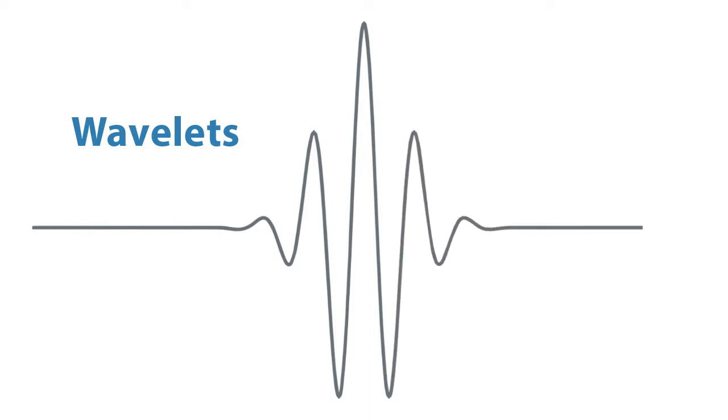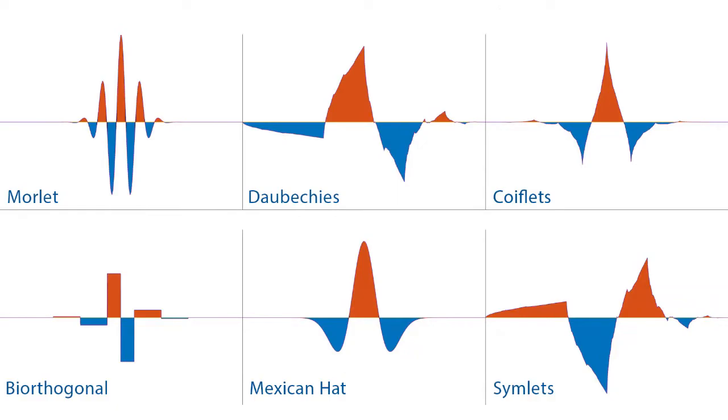Unlike sinusoids, which extend to infinity, a wavelet exists for a finite duration. Wavelets come in different sizes and shapes. Here are some of the well-known ones. The availability of a wide range of wavelets is a key strength of wavelet analysis.